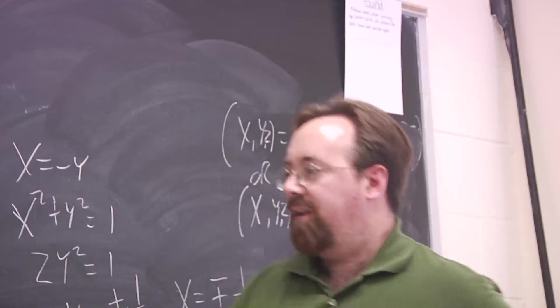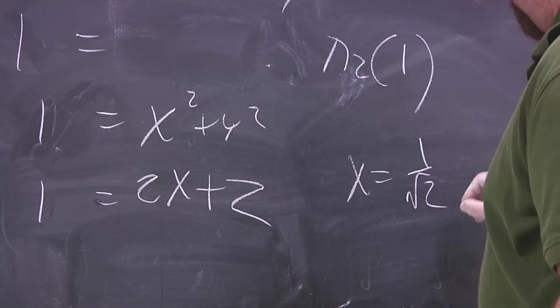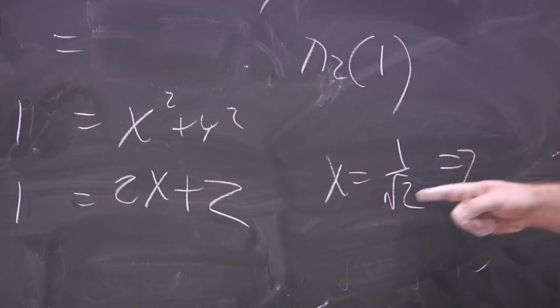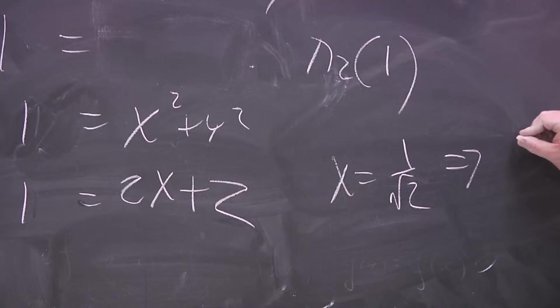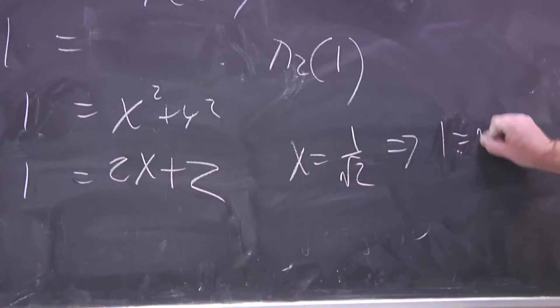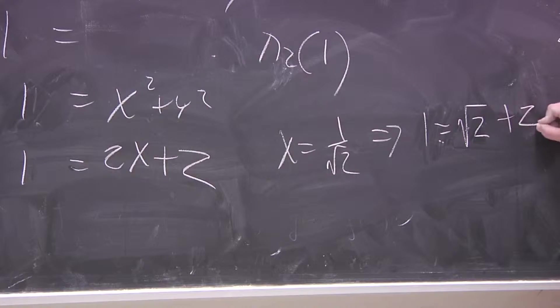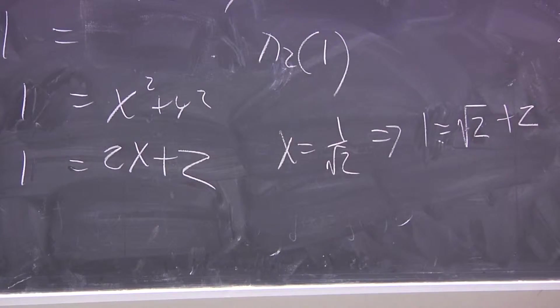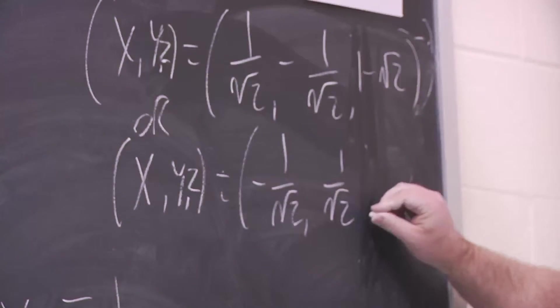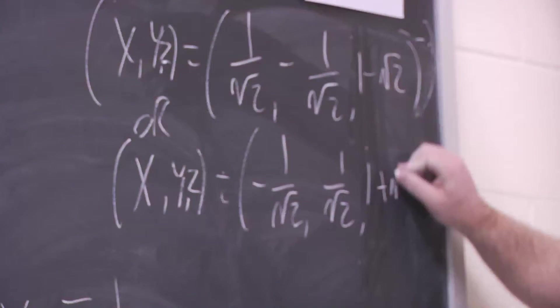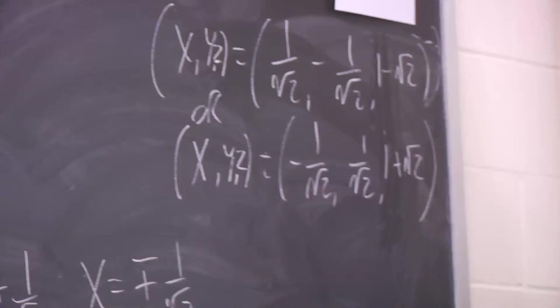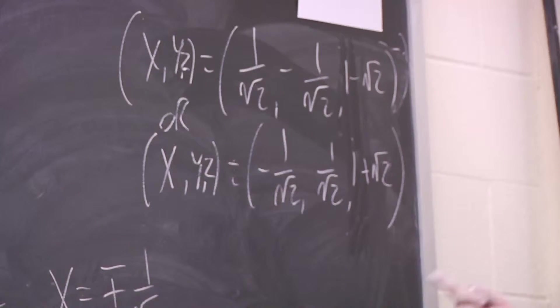Z is equal to 1, so if X is equal to 1 over the square root of 2, then we have 1 is equal to the square root of 2, because we're doubling it, plus Z. So in this case, our Z value is 1 minus the square root of 2, and here it's 1 plus the square root of 2. These are the X's, Y's, and Z's, the only points where everything works out.